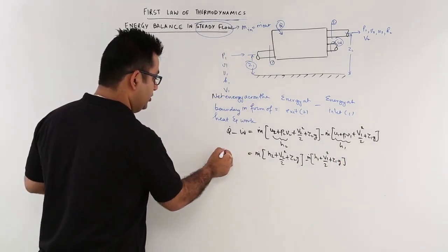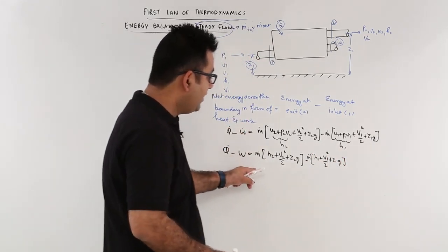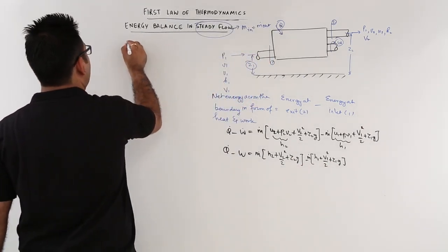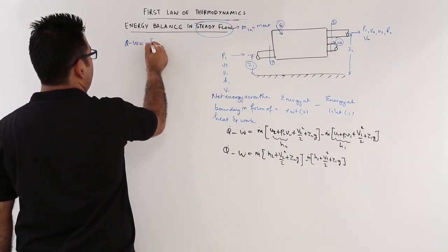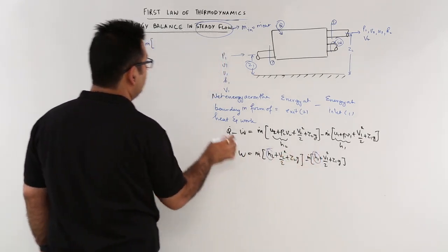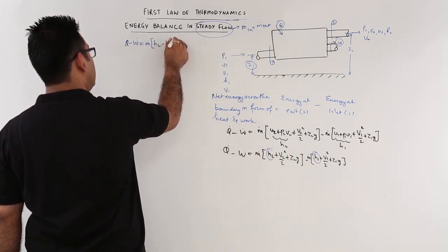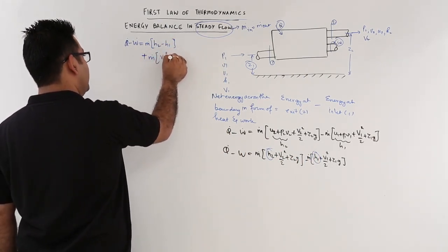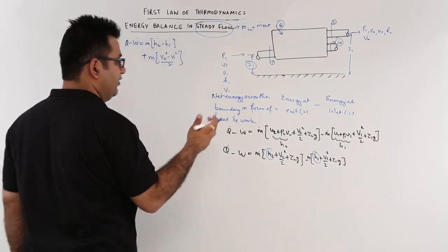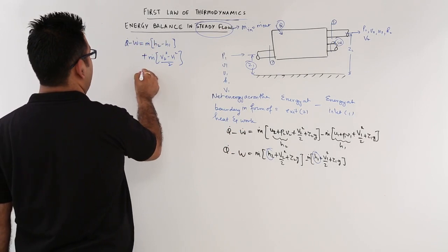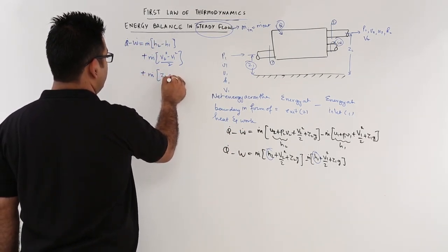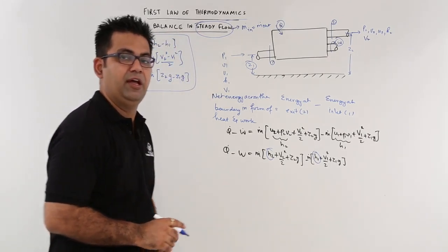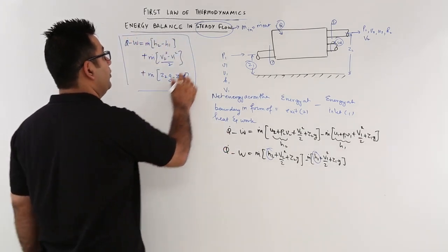This becomes your energy balance. If you take M dot common, this would become Q dot minus W dot equals M dot into H2 minus H1 plus M dot into V2 squared minus V1 squared by 2, that is the difference of kinetic energies, plus M dot into Z2G minus Z1G. So this is the entire equation we are interested in, corresponding to a steady flow.